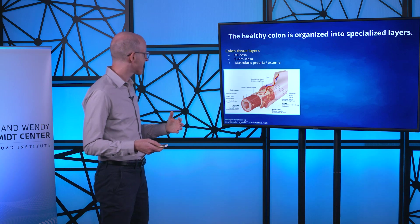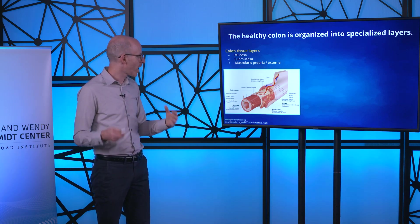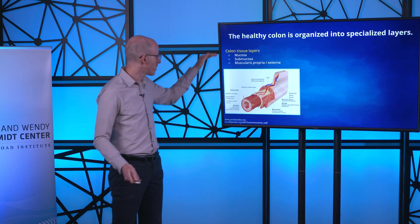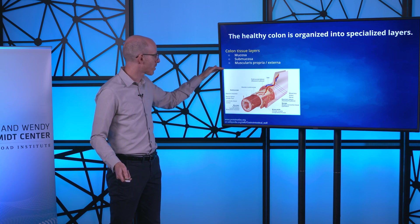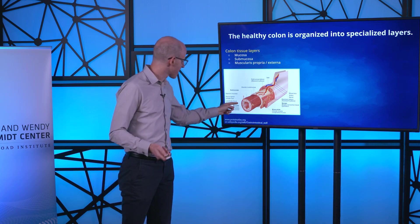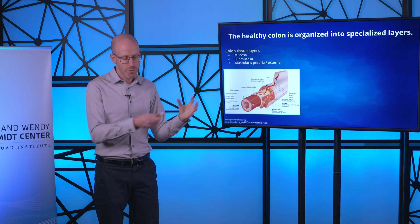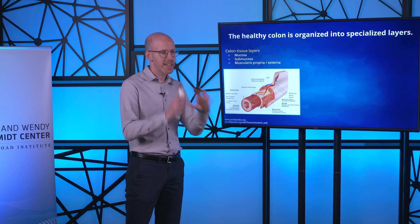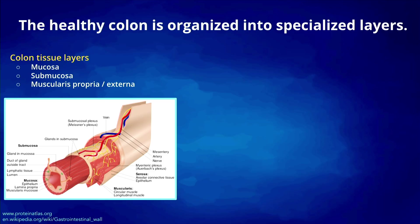The colon has a somewhat complicated organization. The colon tube is made up of multiple layers: the mucosa, the submucosa, and the muscularis propria. The mucosa is the innermost layer, where food or partially digested food gets pushed down the tract, and colonic crypts line the mucosa. Below that is the submucosa, a dense and irregular connective tissue. Finally, the muscularis propria is a thick muscle layer involved in peristalsis — pushing food down the gut tube.